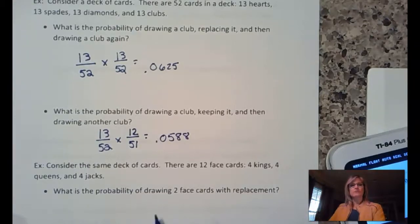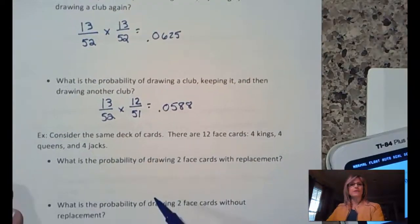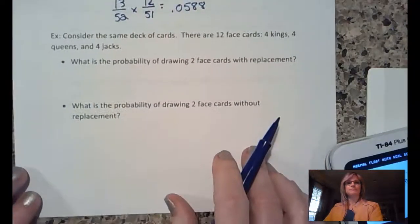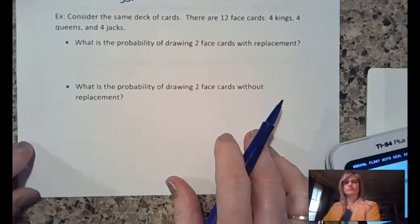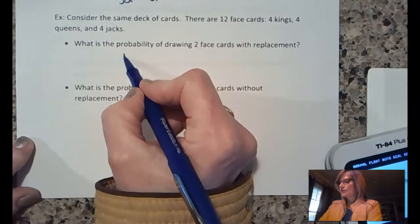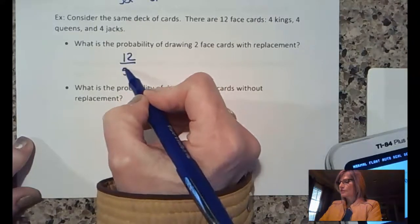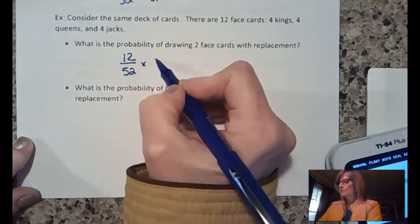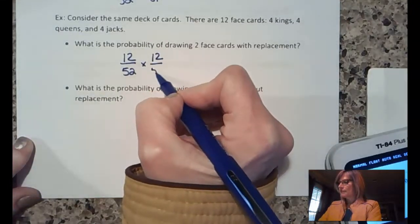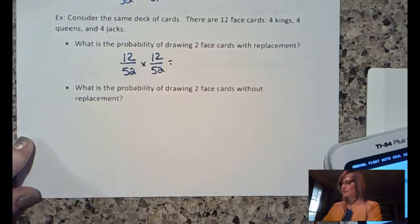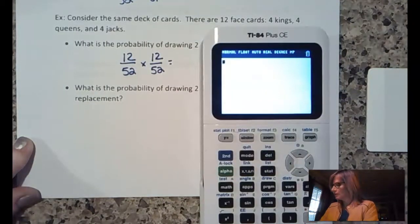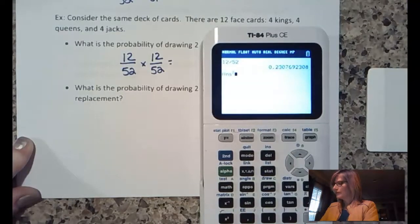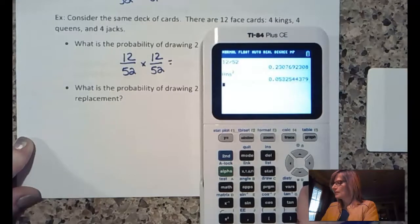What's the probability of drawing two face cards with replacement? So to begin with, 12 out of the 52 cards are face cards, and then we put it back. So, there are still 12 out of 52 cards that are face cards. 0.0533.